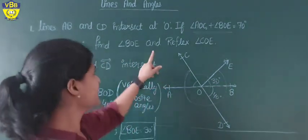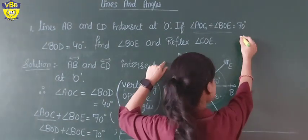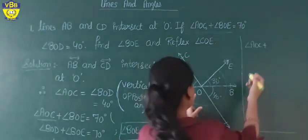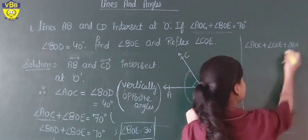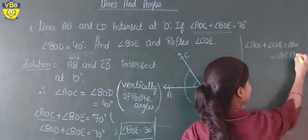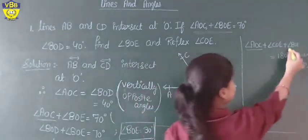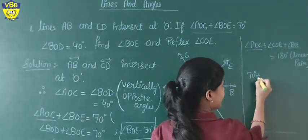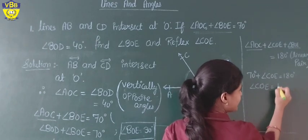BOE is equal to 30 degrees — this is our first part. Now the second part: what is the value of angle COE? Angle AOC plus angle COE plus angle BOE equals 180 degrees, because they are a linear pair. Since AOC plus BOE equals 70 degrees, we get 70 plus angle COE equals 180 degrees, so COE equals 110 degrees.